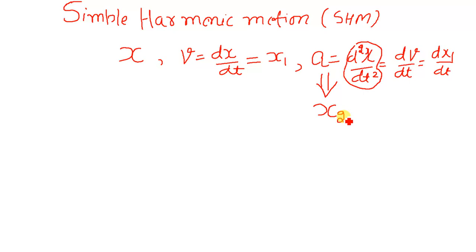So instead of using the symbol v for velocity and a for acceleration, I will be using symbol x1 for velocity and x2 for acceleration. x1 stands for first order derivative and x2 stands for second order derivative. Then we must know what the potential energy is.